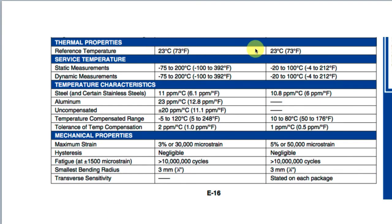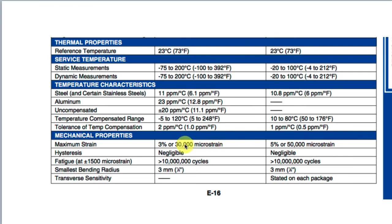You'll find specifications about the temperature range these devices work in. Temperature characteristics describe how much variation in measurement you'll see when mounted on different elements, and how large the variation is if uncompensated. With temperature compensation, you can get down to very small temperature-induced variations. Maximum strain is a key specification — these gauges can go up to 3% or even 5% strain, but for measurements on metals we're usually looking for much smaller strains.